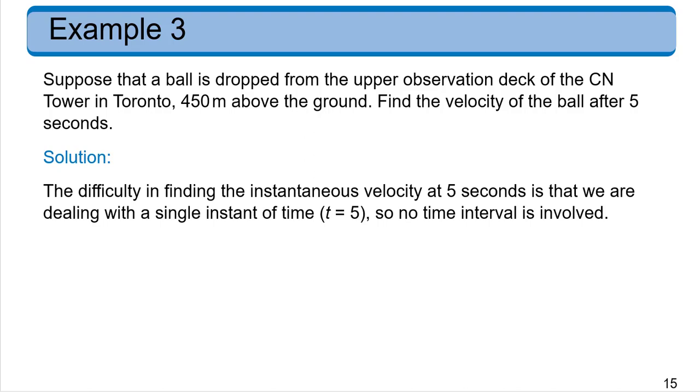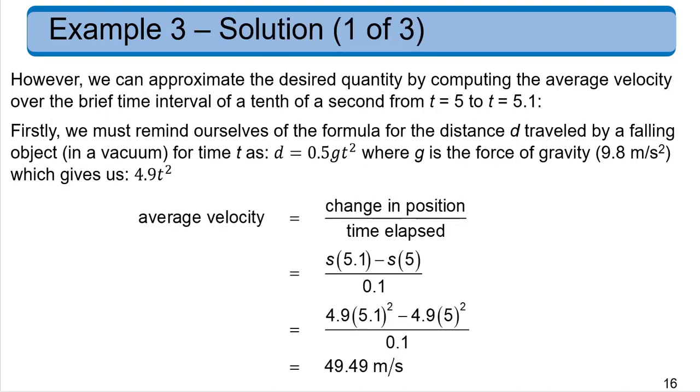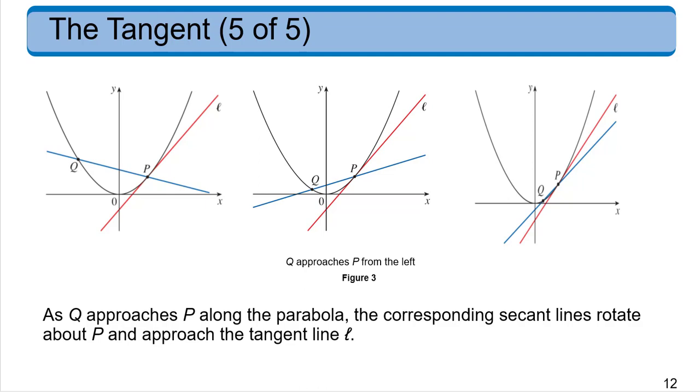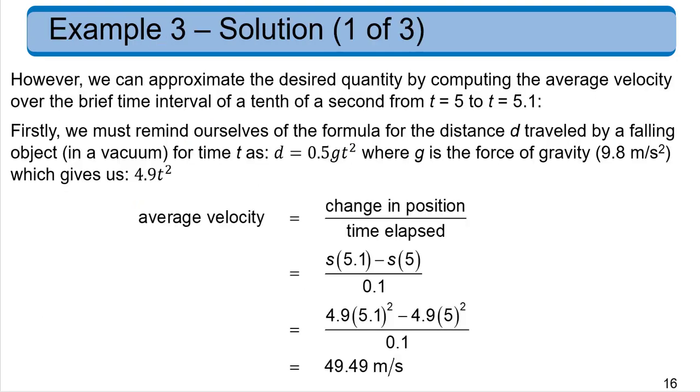And we normally need a time interval in order to calculate things because we need a difference of distance over a difference of time to get miles per hour or feet per second, things like that, because that's what an average is. But we want an instantaneous instead of an average. So you can think of before in those pictures, secant lines are giving you an average rate of change over an interval. And then the tangent line gives you that instantaneous rate of change at a point.